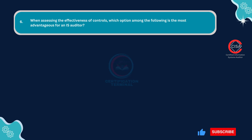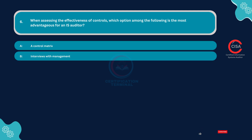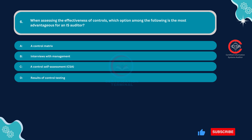Question number six: When assessing the effectiveness of controls, which option among the following is the most advantageous for an IS auditor? Option A: A control matrix. Option B: Interviews with management. Option C: A control self-assessment. Option D: Results of control testing. The correct answer is Option D — results of control testing.